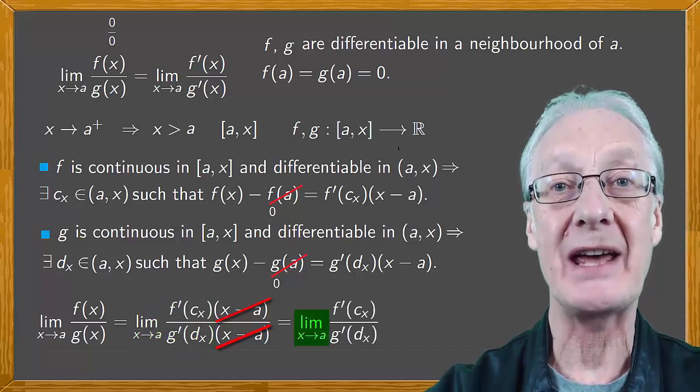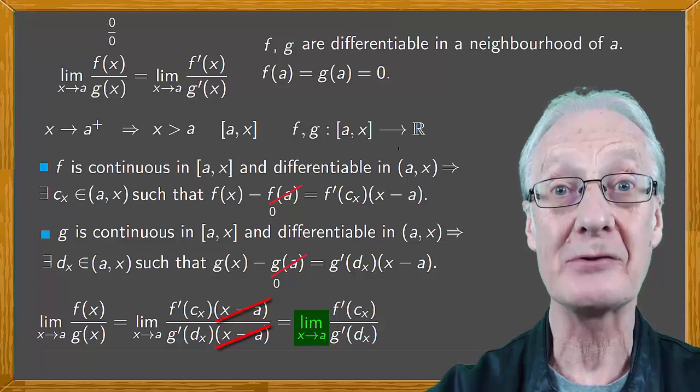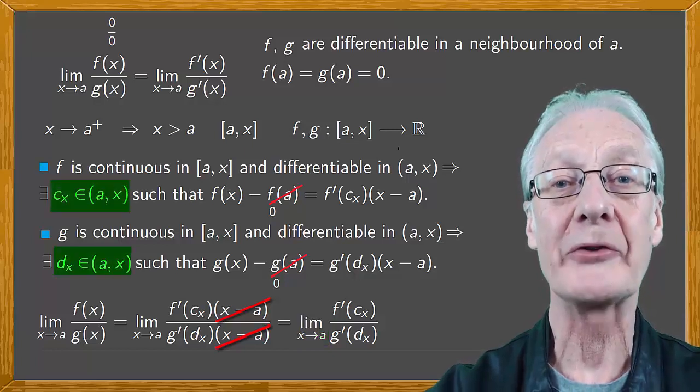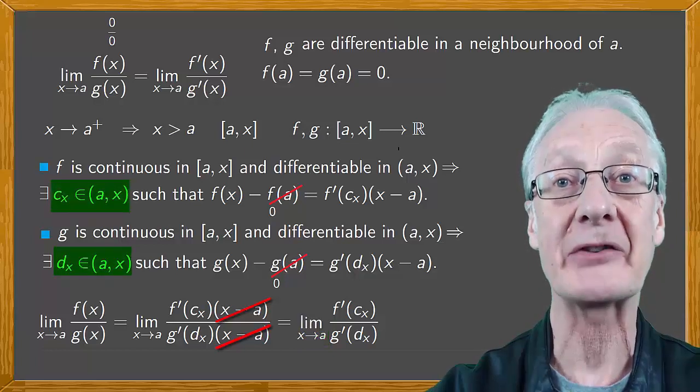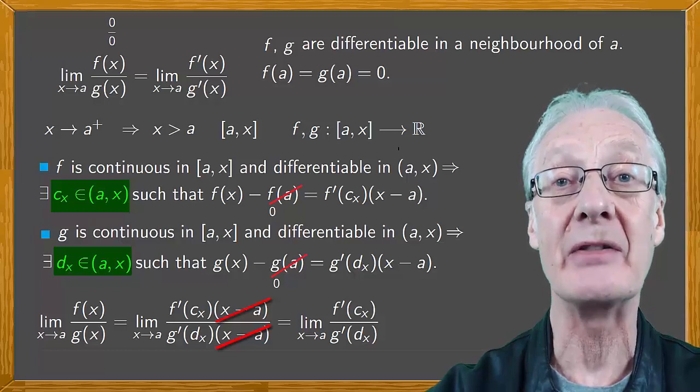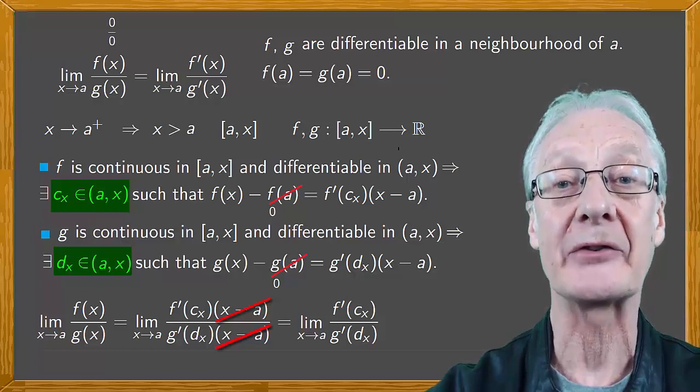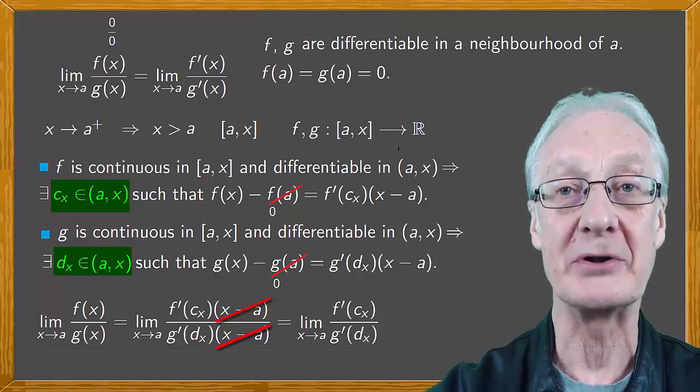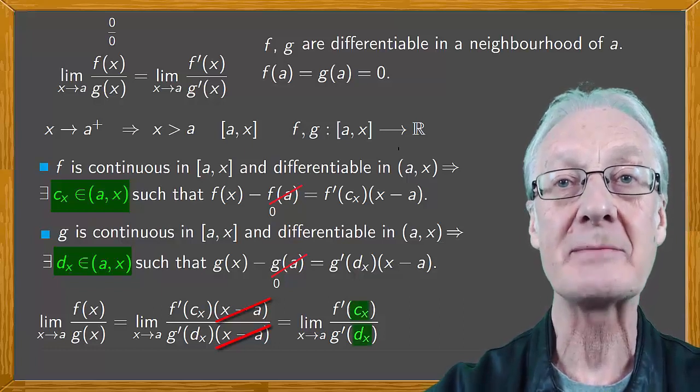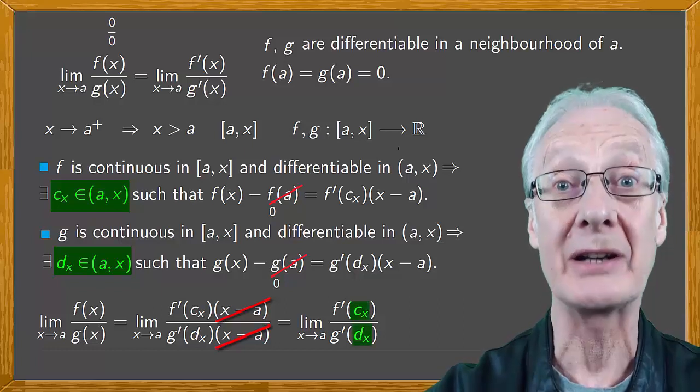As x tends to a, x gets very close to a. We also have that for this x, c_x and d_x are in the open interval (a,x) and x pushes them to a. So c_x and d_x are very close to a.